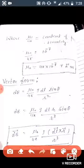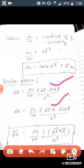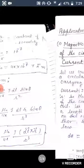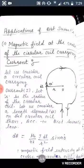Now in vector form, dB equals μ₀/4π · i·dl·sin(theta) / r². Since theta is the angle between the length element dl and r, we multiply and divide by r, and after simplification the vector form of Biot-Savart's Law is obtained. This is the vector form of Biot-Savart's Law.